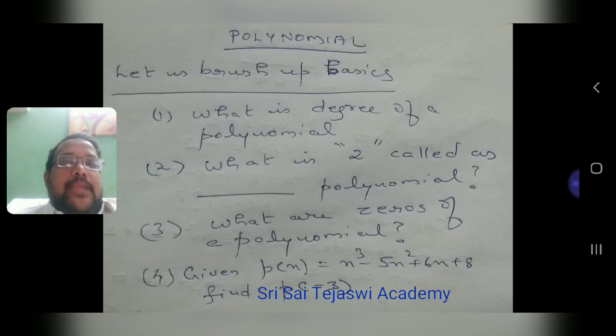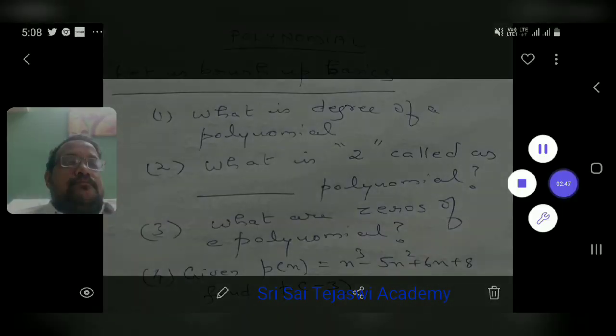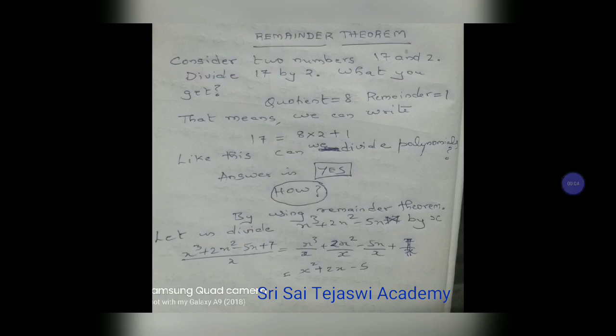Now let us move on to the remainder theorem. Consider two numbers: 17 and 2. Divide 17 by 2 — quotient is 8, remainder is 1. So we can write 17 as quotient into divisor plus remainder: 8 into 2 plus 1, which gives 16 plus 1 equals 17. This is how we divide numbers.